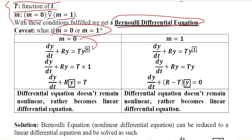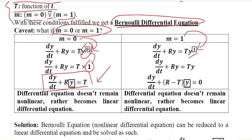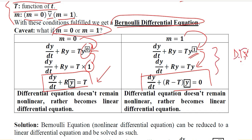When m equals 0, y raised to the power 0 is 1, so y will disappear and we are left with a simpler equation. When m equals 1, this gives y raised to the power 1, and after simple algebra we arrive at a resulting equation. Both of these equations show that it is a linear differential equation, because the power of y is 1 in both cases.